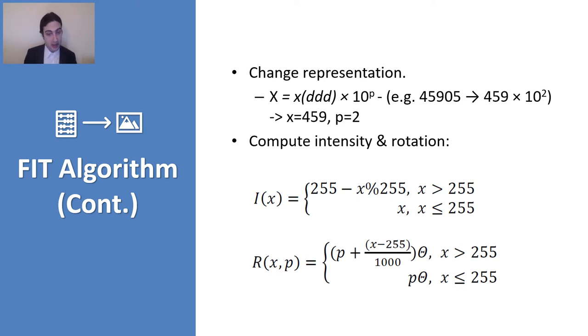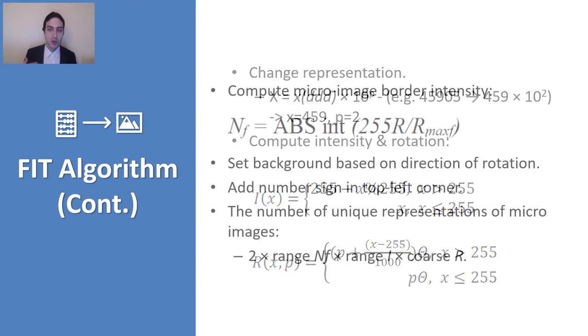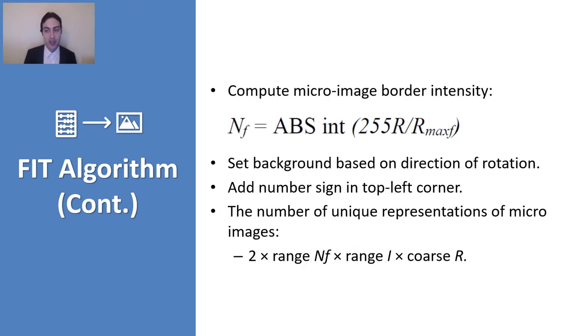But obviously, rotation on its own and intensity, the brightness of the gradient, are not enough. Because if, for example, we have a numerical feature that has a rotation alpha, and another feature that has rotation alpha plus 360 degrees, then these will have the same rotation, but they have different significance, right? So that's why we come up with the micro image border intensity to reflect these differences. So what we do for a given feature, we take the maximum rotation across the entire dataset, just for that feature, and we normalize the border intensity accordingly. So the feature with the maximum rotation will get the brightest border, and the feature with the least rotation will get the darkest border.